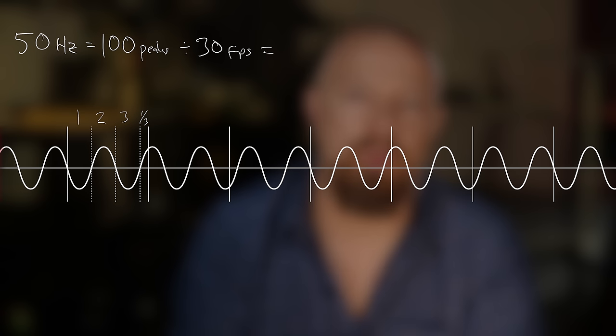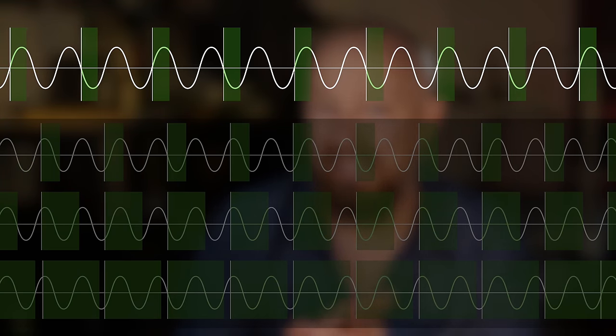When you divide 50 hertz — or 100 peaks — by 30 frames, you end up with three and one-third peaks per frame. So each frame does not start its exposure on the same part of the wave. This uneven starting point means that for most shutter speeds, the amount of light hitting the sensor during each exposure will be different every time, resulting in an uneven exposure across frames — which is where the flicker comes from. But if the exposure starts and ends at the same part of the wave, the total light reaching the sensor will be the same in every frame. Each frame can have a different starting point, as long as it ends in the same position that it started on.